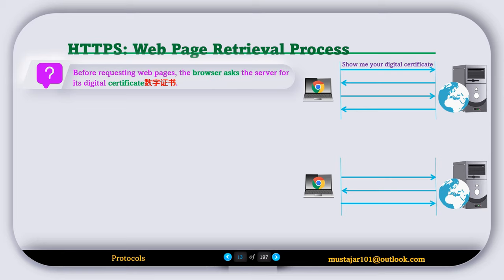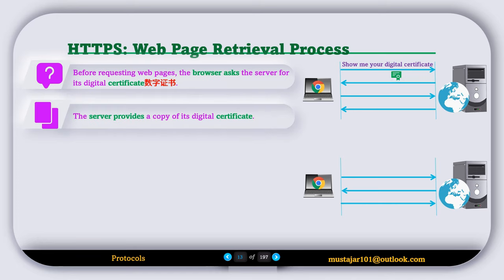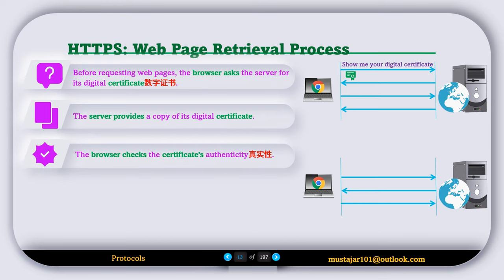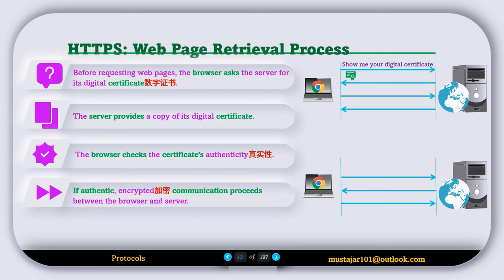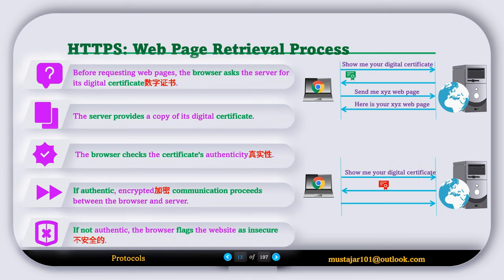Now let's understand the HTTPS web page retrieval process. Before requesting web pages, the web browser asks the server for its digital certificate. The web server provides a copy of its digital certificate, and the browser checks the certificate's authenticity. If authentic, encrypted communication proceeds between the browser and server. If not authentic, the browser flags the website as insecure.